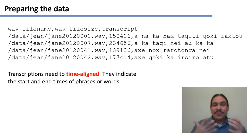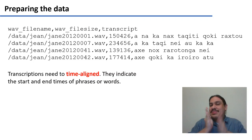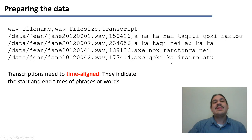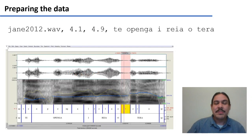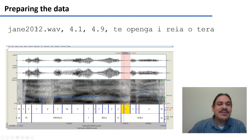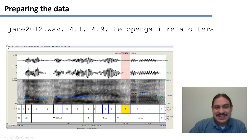What we had before we did this was a big file called Jane 2012, which had a long interview in it, and we chopped it up so that each small bit corresponds to just a sentence. We could chop it up because we had it in a time-aligned format — we knew that the file Jane 2012 contained the phrase 'the open idea' between 4.1 seconds and 4.9 seconds.